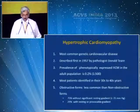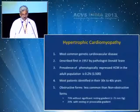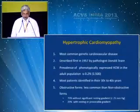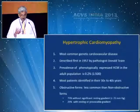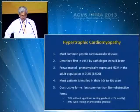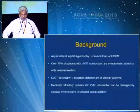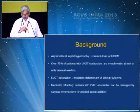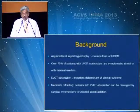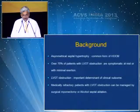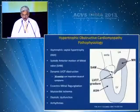Hypertrophic cardiomyopathy, as we understand, is an infrequently expressed phenotype in the general population. Most patients identified are in their 30 to 40 years of age. The obstructive form is less common than the non-obstructive form, and 75% of patients are without a significant gradient, while 25% have provokable or increased resting gradients. Asymmetric septal hypertrophy is the most common form of HCM. 70% of patients with LVOT obstruction are symptomatic at rest or minimal exertion, and LVOT obstruction is an important determinant of clinical outcome. Medically refractory patients with LVOT obstruction can be managed by surgical myomectomy or alcohol septal ablation.